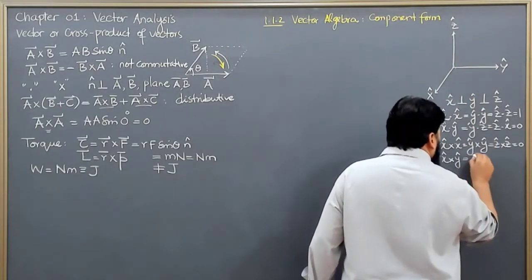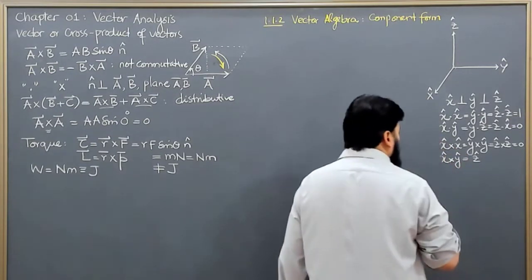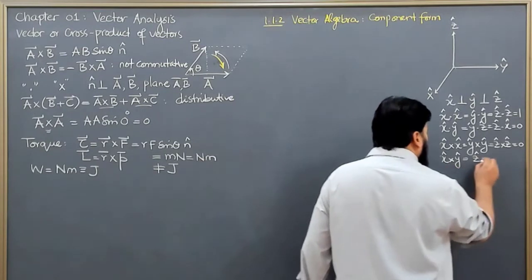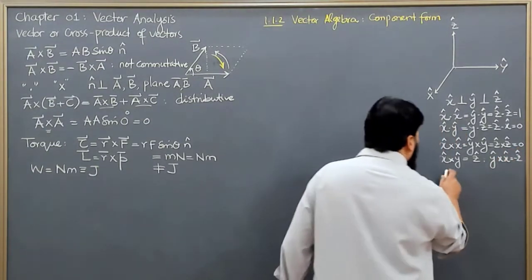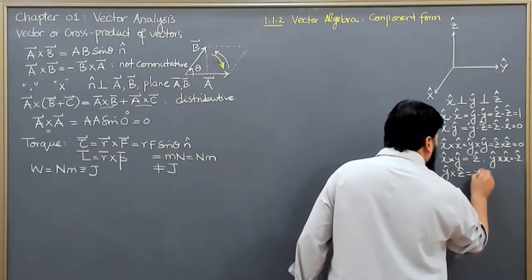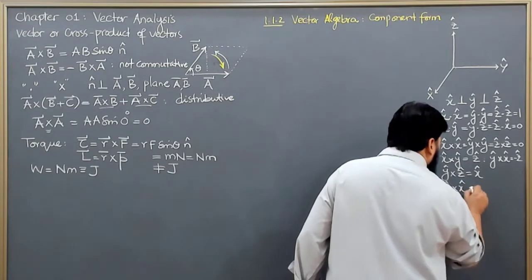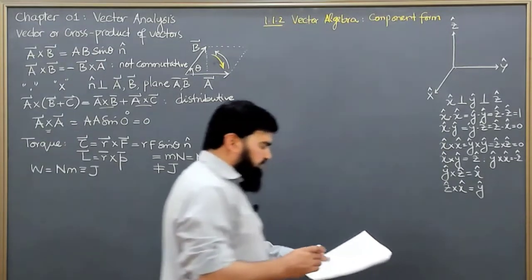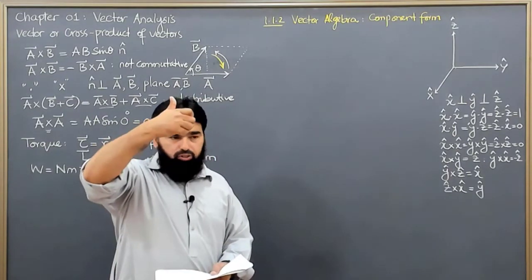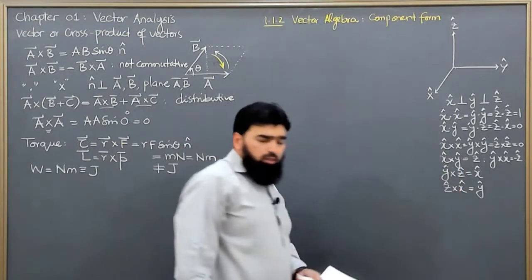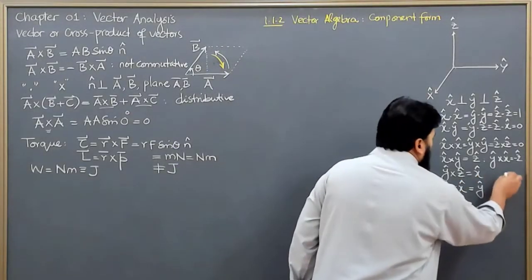x×y equals the z unit vector, due to cyclic rotation. If we reverse the order: y×x equals minus z. y×z equals the x unit vector, and z×x equals the y unit vector. For example, considering x and y as the plane, rotating x along y gives the z-axis direction; rotating y along x gives the minus z direction.